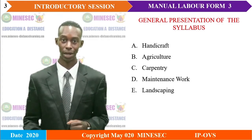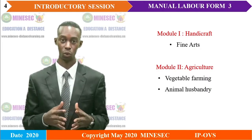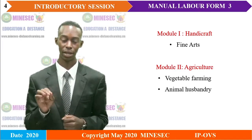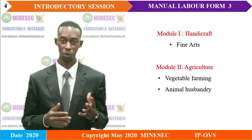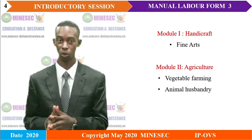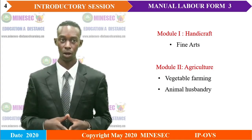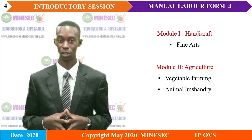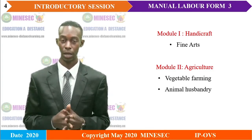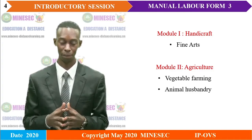Let's look at the various sub-topics under these modules. Under Module 1, which is Handicraft, we have just one sub-topic, which is Fine Arts. Under Module 2, Agriculture, we have two sub-topics: Vegetable Farming and Animal Husbandry. Under Vegetable Farming, we will deal with the cultivation of crops, roots and bulbs for this class of Form 4. Under Animal Husbandry, we will deal with the rearing of rabbits.